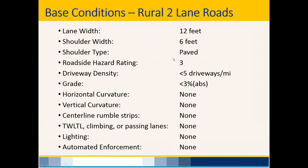Here's an example of base conditions for rural two-lane roads — you can find this list in the Highway Safety Manual. You're rarely going to have a project that exactly matches these base conditions. You may have 12-foot lanes, but your shoulder width might not be 6-foot, it may not be paved, the roadside hazard rating may be different, or you may have more or fewer driveways. You have to consider all of these when applying CMFs and adjusting the SPF.